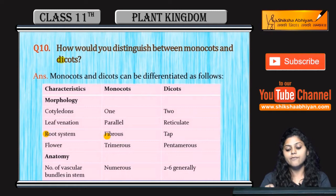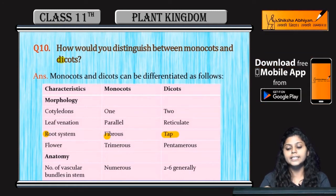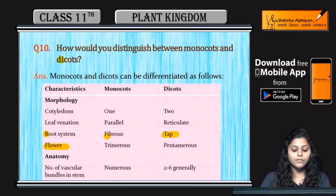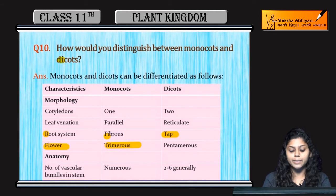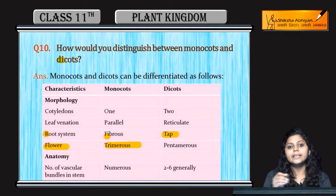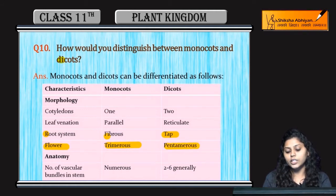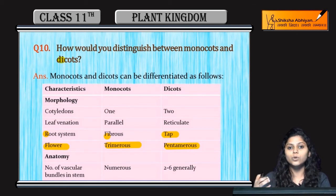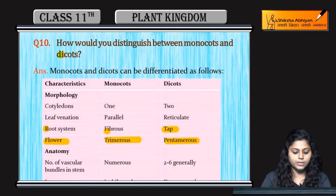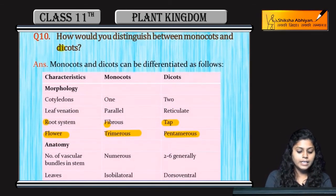The root system of monocots is fibrous, whereas dicots have a taproot system. Regarding flowers, monocots are trimerous — floral parts occur in threes — whereas dicots are pentamerous, with five floral structures in leaves or flowers.